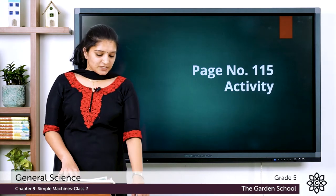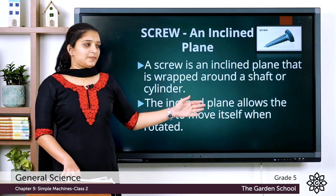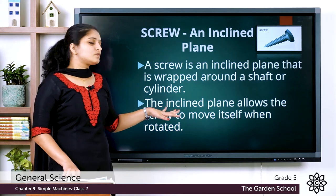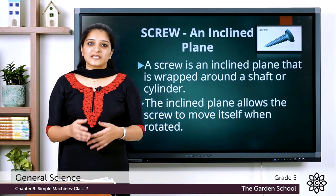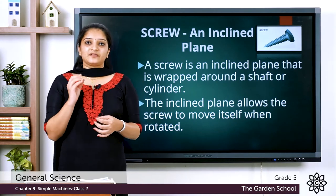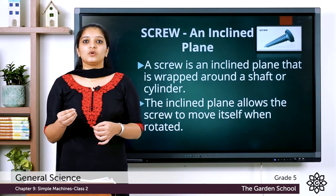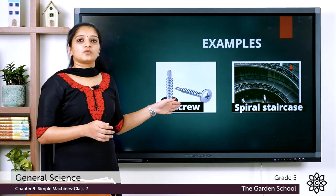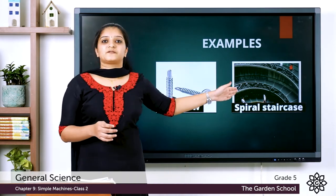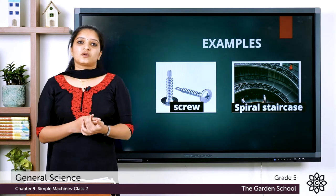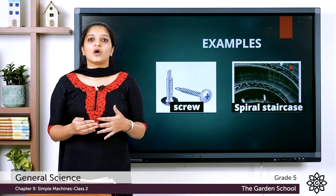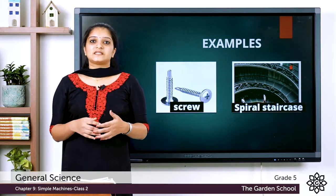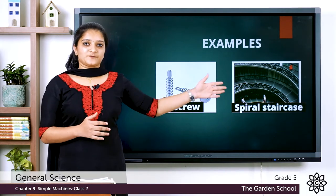Now let's look at the next type of simple machine: the screw. A screw is an inclined plane that is wrapped around a shaft or cylinder, and the inclined plane allows the screw to move itself when rotated. A screw is very similar in structure to a nail but has grooves around it which provide better grip. Examples include screws and spiral staircases.